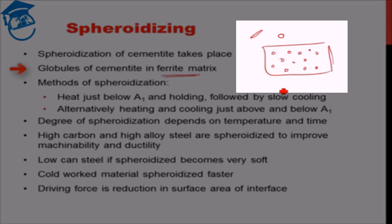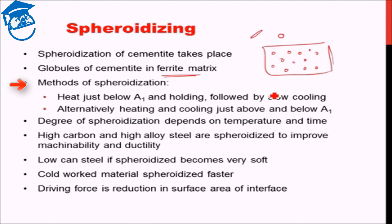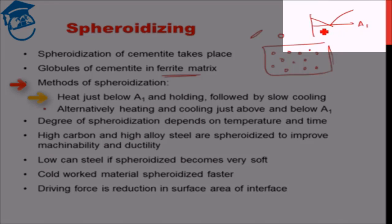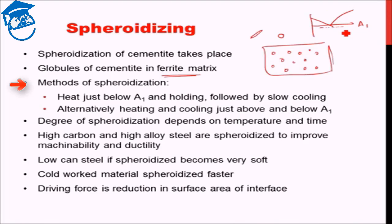How does spheroidization take place? There are several methods. One method is to heat just below the A1 temperature — at around 700 degrees Celsius — hold it there, and then slowly cool it. This provides sufficient temperature for diffusion to take place, and the elongated cementite particles convert to sphere-shaped cementite particles. The driving force is reduction in surface area, as it is energetically favorable to have spherical particles.